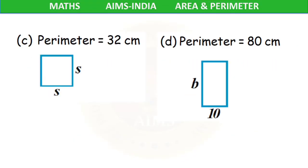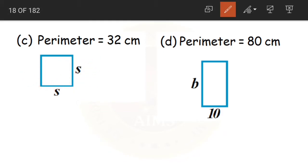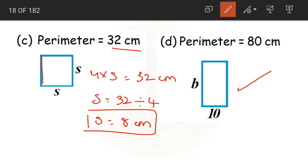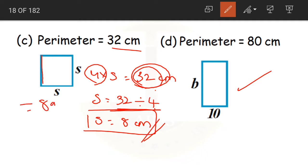Now we have two more examples. The perimeter is 32 centimeters and this is a square. So 4 into S equals 32 centimeters. S equals 32 divided by 4, which is 8 centimeters. Finding the side of a square is a little bit easier than finding the side of a rectangle — you just divide the perimeter by 4 to get the length of the side.